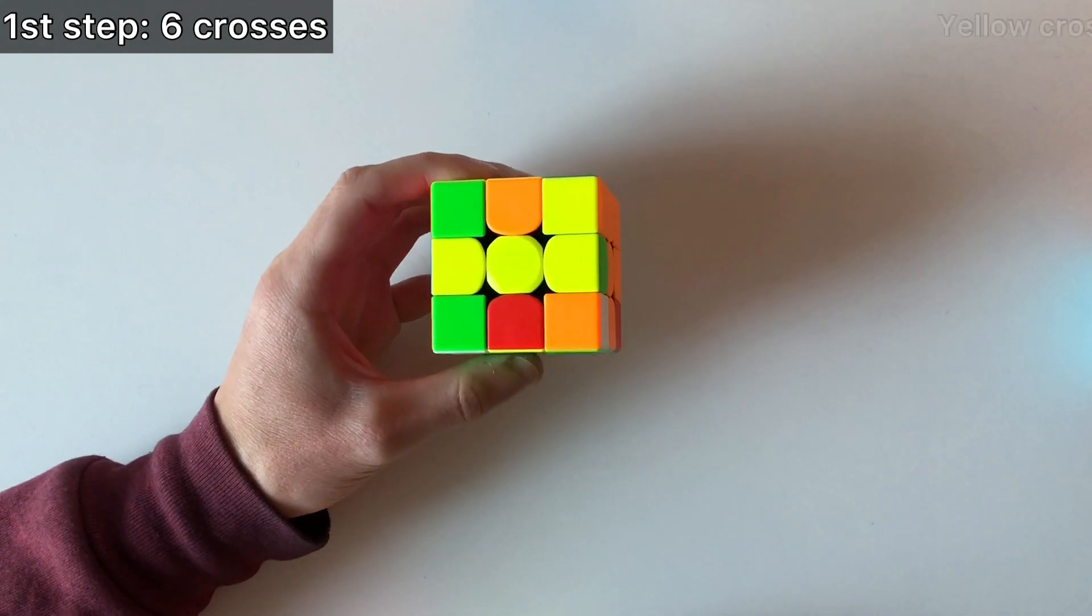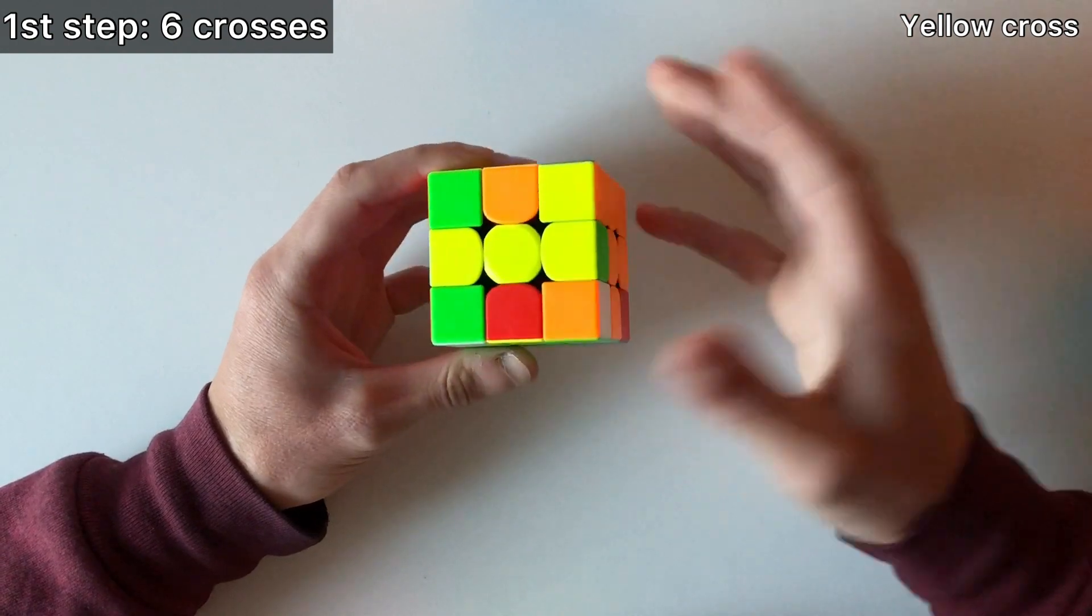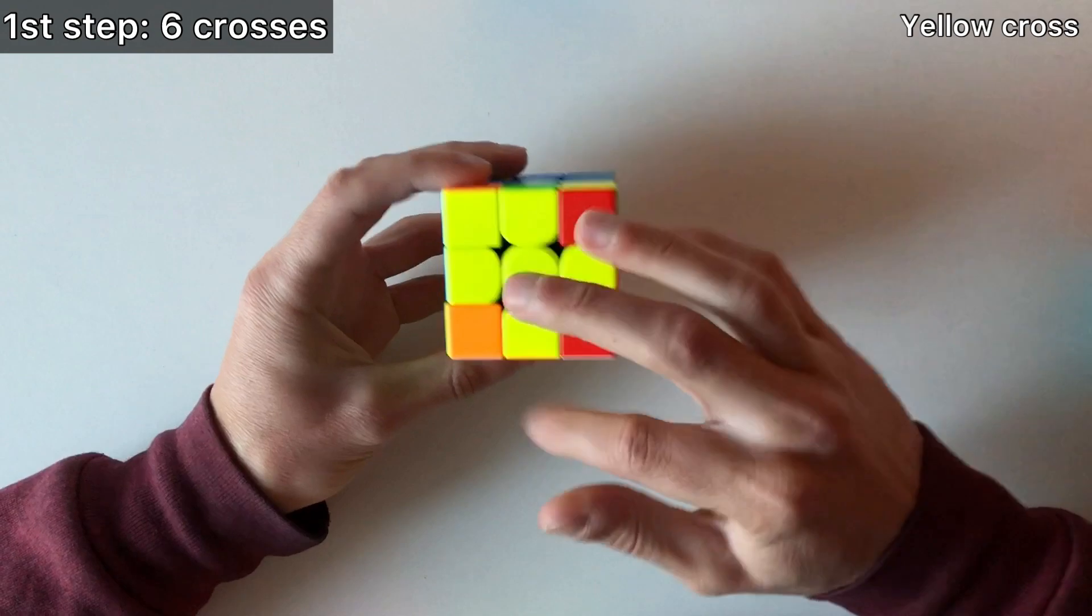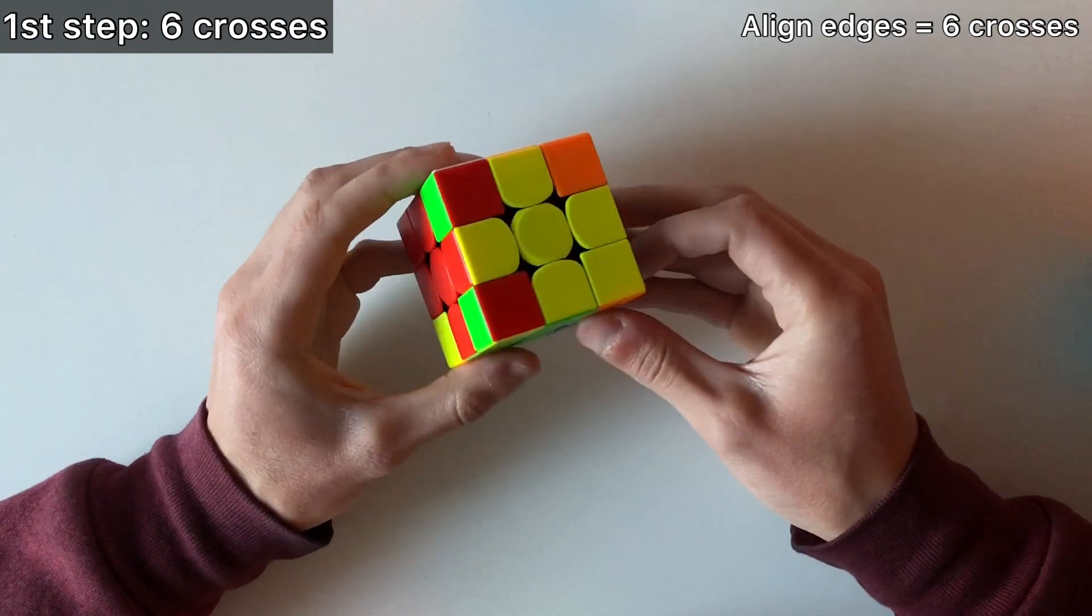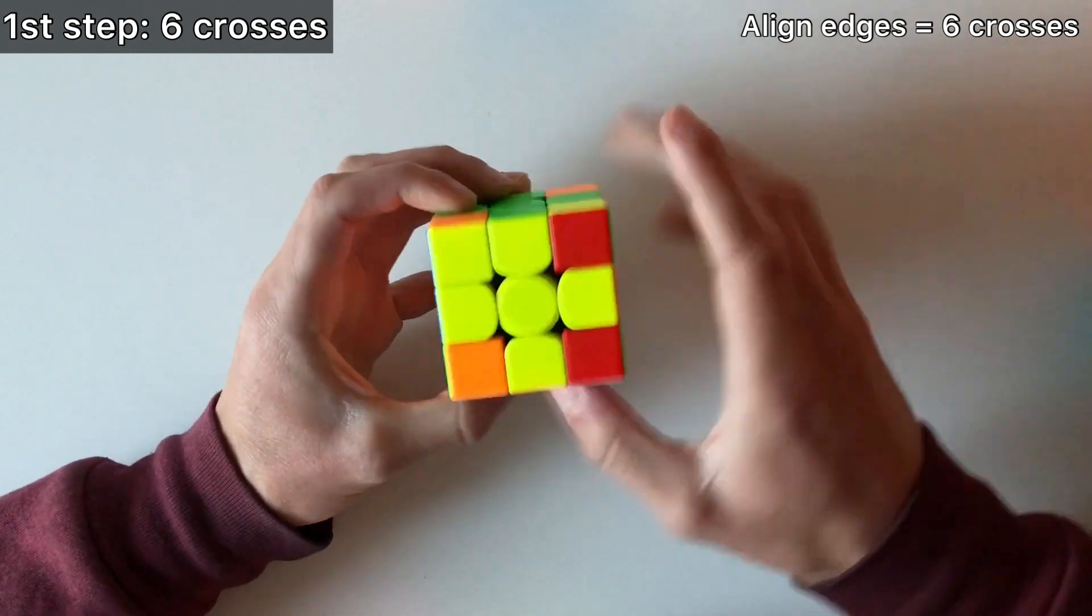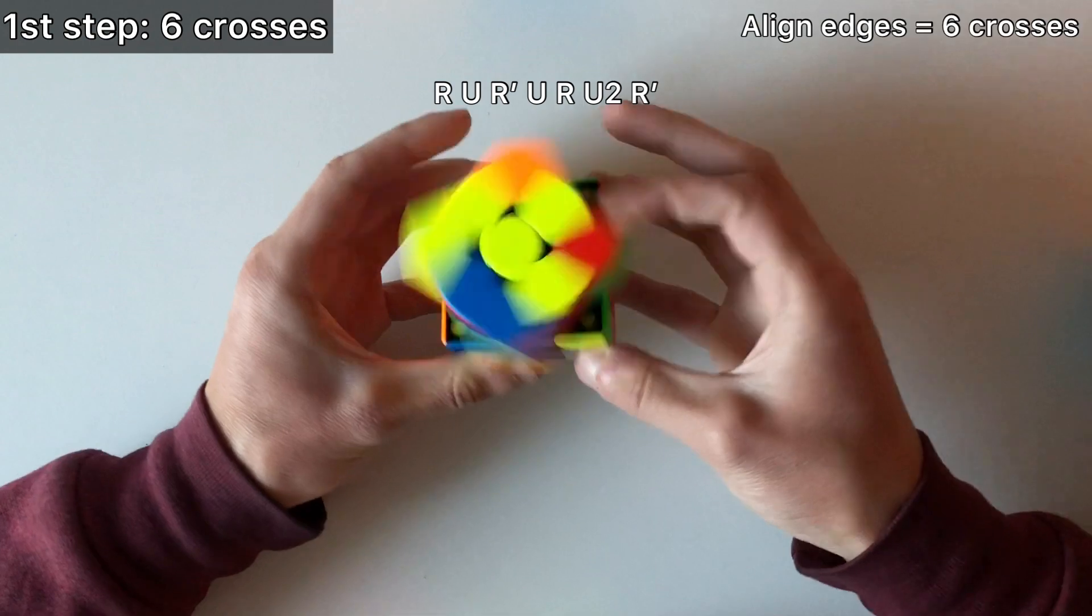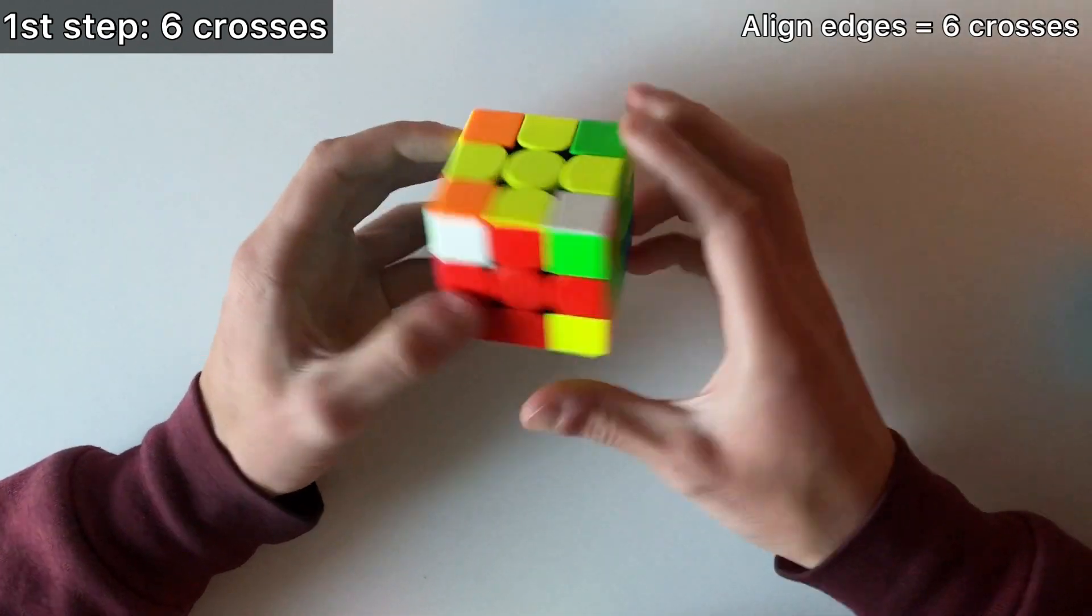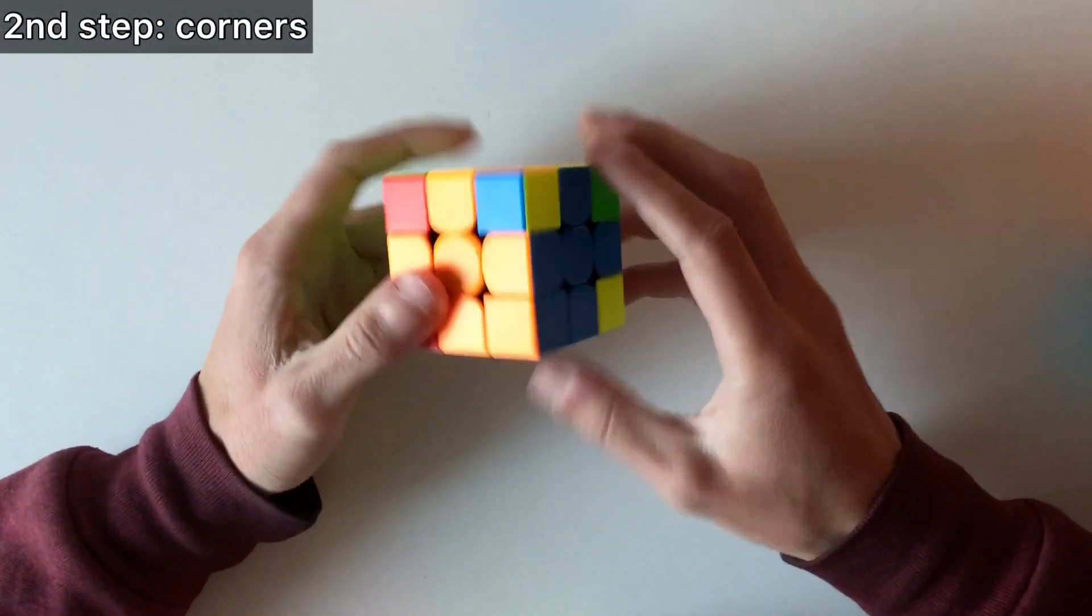Now let's do the yellow cross. The beginner's algorithm for this is the horizontal line. So that's the yellow cross. Now to do all four, the six crosses, I have to align these edges. These two are aligned, these two are not. So like the beginner's method, this on the back, this on the right, and do a sequence. Now I can align them. So now the cube has all edges and all centers solved, only the corners left to solve.